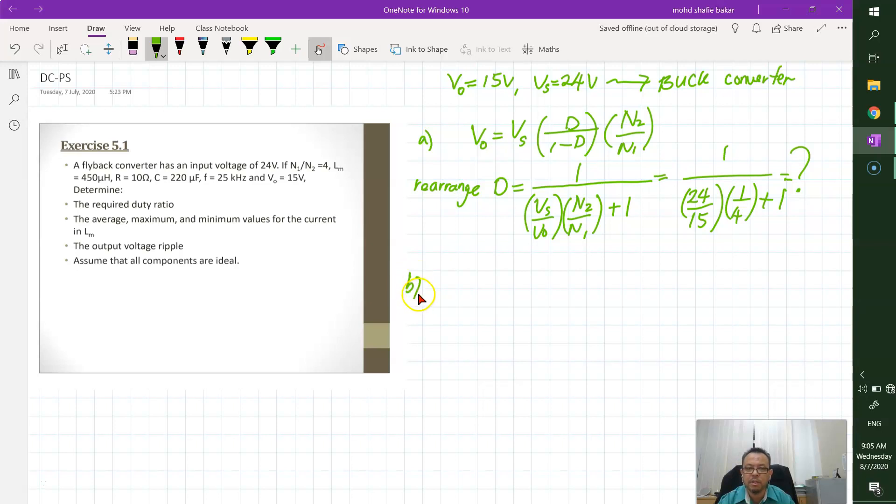Now we go to question number B. Question number B asks us to calculate the average current in Lm. So meaning that we determine I Lm equals to Vout squared over Vs D R. So what you have here, 15 squared divided by 24, so the D you get from here and multiple of R. What is R? 10 Ohm.